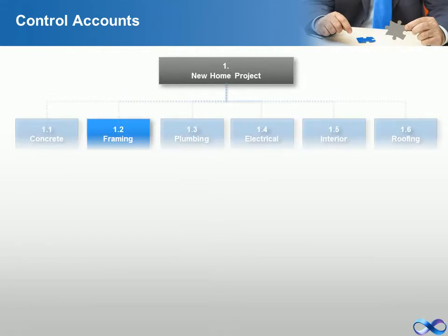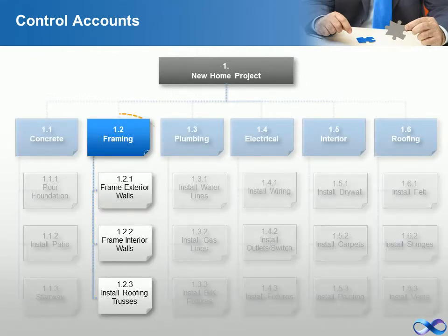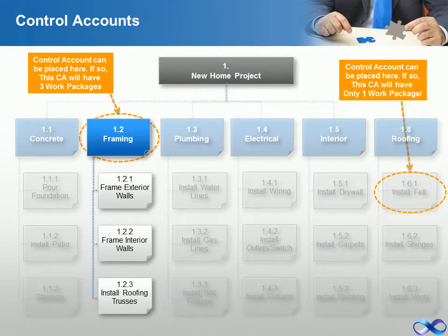A management control point is where the integration of scope, budget, actual cost, and schedule takes place, and where the measurement of performance will occur. Control accounts are placed at selected points — specific components at selected levels — of the work breakdown structure. Each control account may include one or more work packages, but each work package may be associated with only one control account. Choosing the optimal decision from the two available options for our example will be revealed later on.